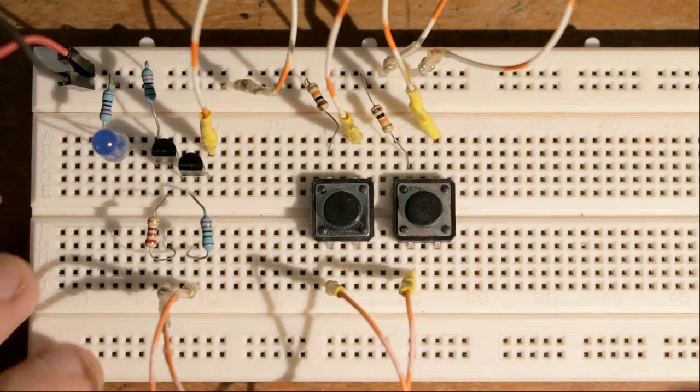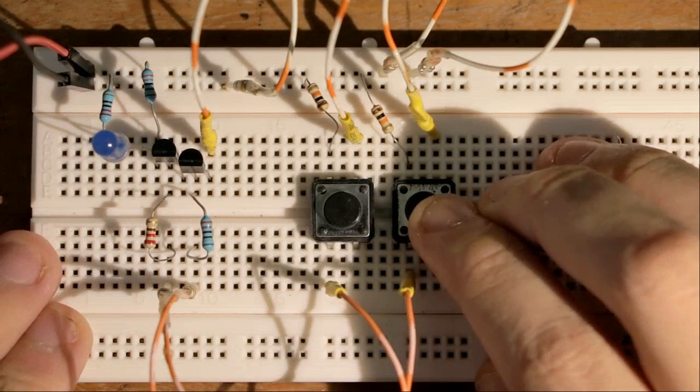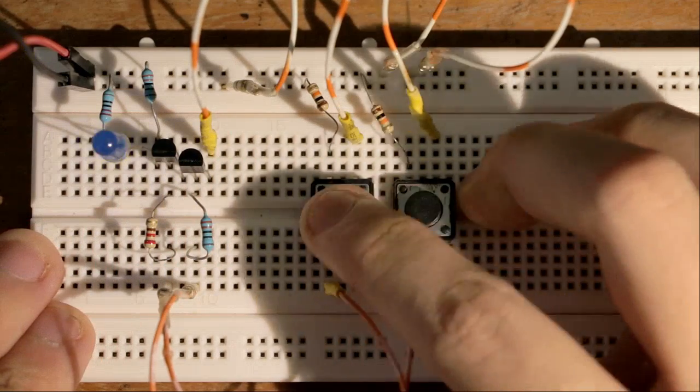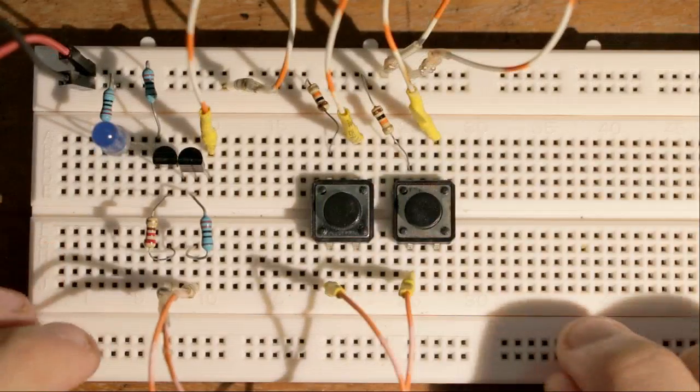We're going to start off with our OR gate. These are our two PNP transistors. Whenever I push down any of these buttons, the light is going to come on. In order to convert this to a NAND gate, I'm going to pull out these two transistors.